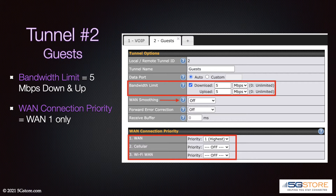Tunnel number two is created by clicking the plus sign to the right of the tunnel one tab. This is going to be used for our guest network, so we'll name it accordingly. We don't want guests using too much bandwidth, so we're applying a bandwidth limit of five megabits per second. We also want to restrict this to the primary WAN with failover to the Wi-Fi WAN.